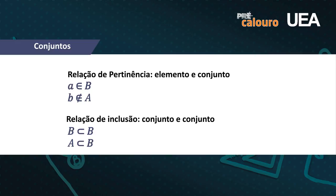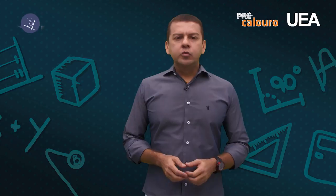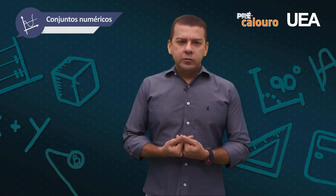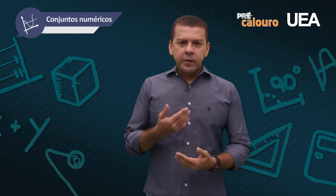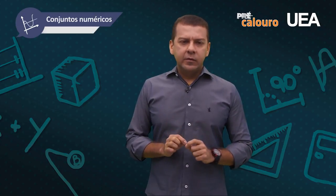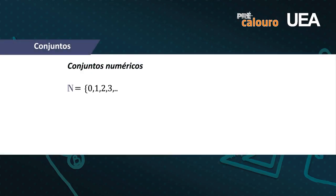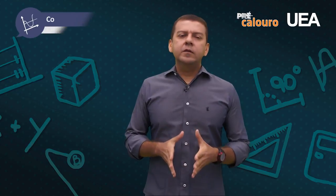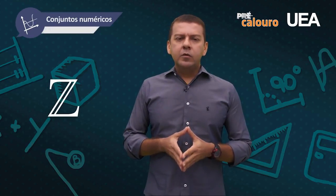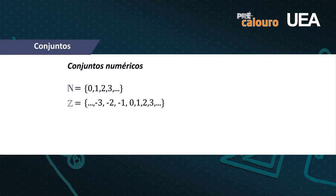Os cinco conjuntos mais utilizados em matemática são: o conjunto dos números naturais, representado pela letra N caligráfica — aquele N com barra dupla — formado pelos números 0, 1, 2, 3 e assim até o infinito, ou seja, sem negativos nem frações, com função de identificação. O conjunto dos números inteiros, que é composto pelos números naturais mais os seus simétricos, ou seja, números positivos e negativos, sem números fracionários.